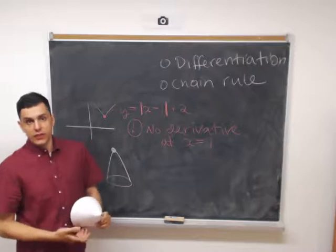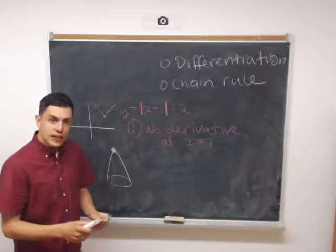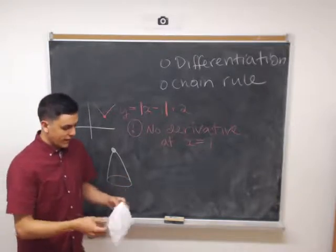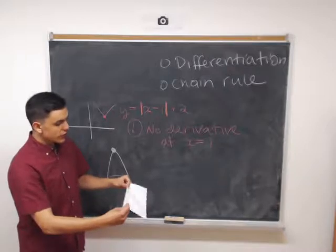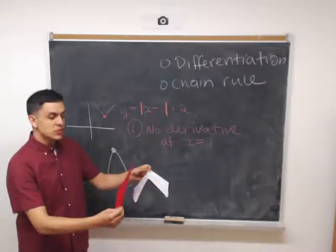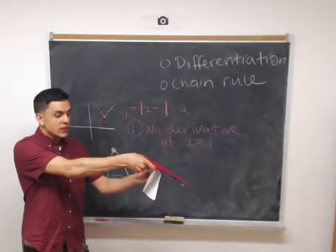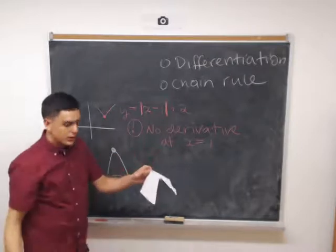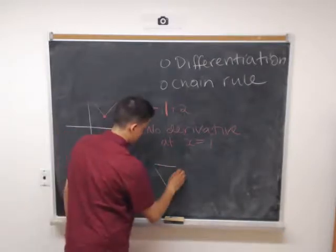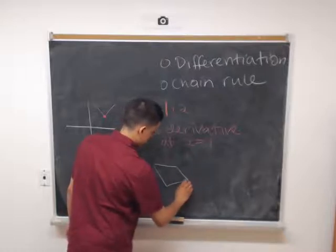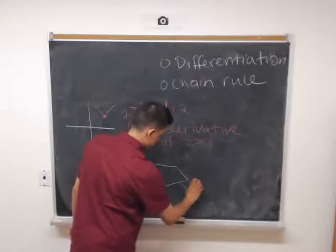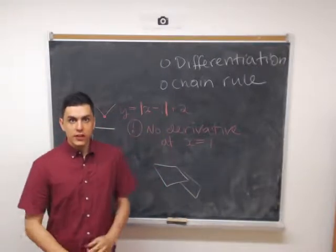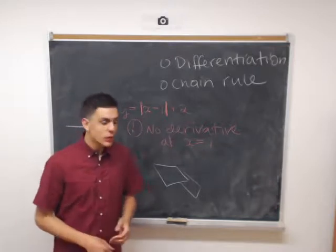Another way in which something can fail to be differentiable in multiple variables is if it has a fold in it. If the graph of our function has a fold at some point, then we might have tangent planes on either side of that fold, but have no tangent plane along the fold itself. So we can see that in multiple variables, differentiation is a more subtle issue than in one variable.